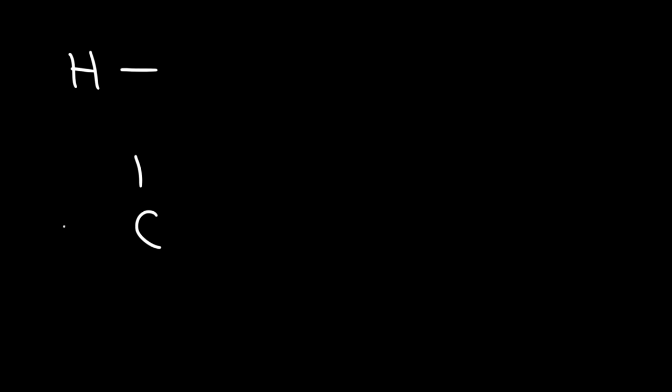Make sure you know this: hydrogen likes to form one bond, carbon likes to form four bonds, and nitrogen likes to form three bonds. For elements that form three bonds, they typically have one lone pair. These are the general trends — there are always some exceptions, so keep that in mind.